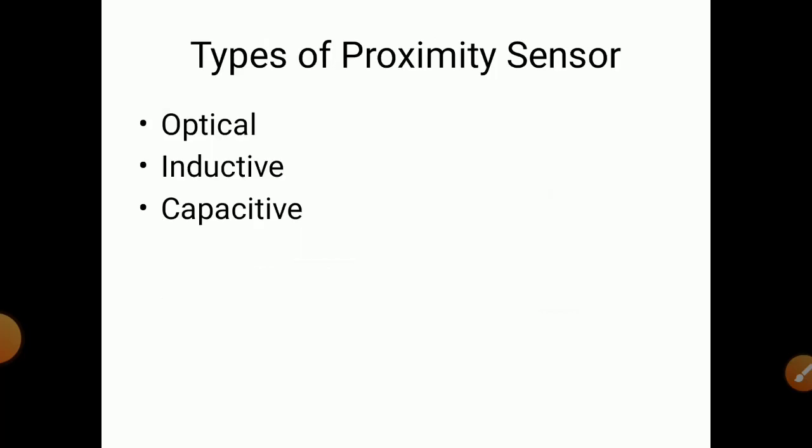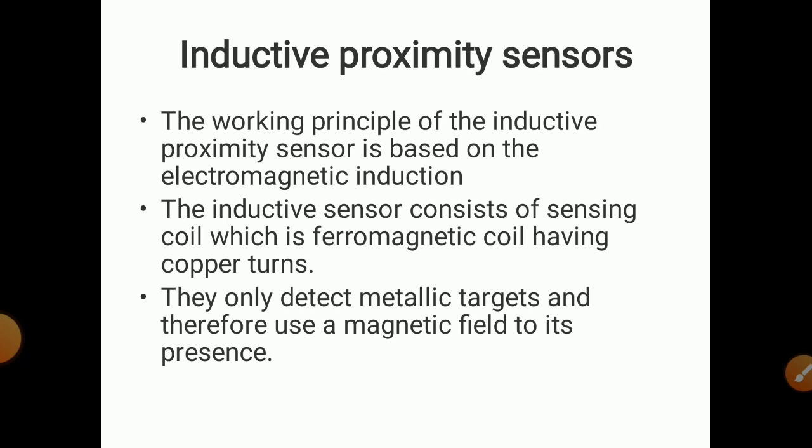There are different types of proximity sensors available. One is optical, the second is inductive, and the third is capacitive. We will study these sensors now — their working principles and diagrams. We will start with inductive proximity sensors.